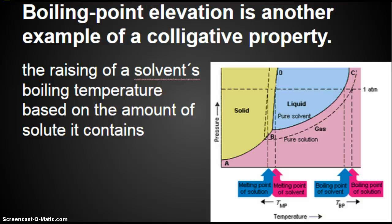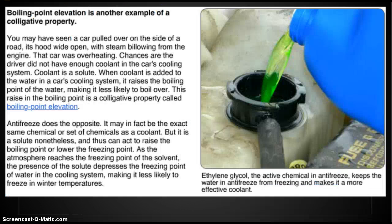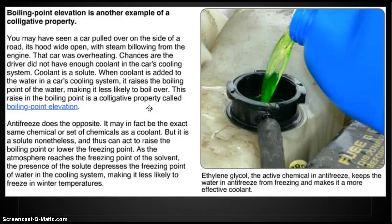Boiling point elevation — boiling point going up — is another example of a colligative property. It is the raising of a solvent's boiling temperature based on the amount of solute it contains. You may have seen a car on the side of the road with steam billowing from the engine — that car was overheating. The driver likely did not have enough coolant. When coolant, which is a solute, is added to the water in the car's cooling system, it raises the boiling point of water above 100 degrees Celsius, making it less likely to boil over.